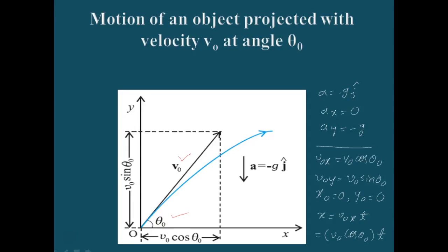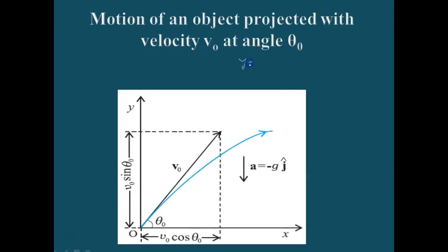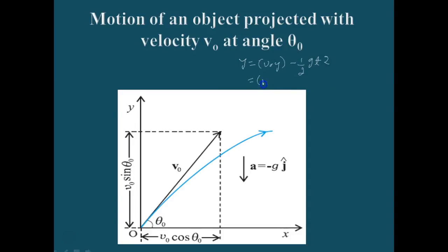Similarly, y is given by V0 sin theta0 · t minus half g t squared, and Vy = V0y minus half g t squared, which we can represent as V0 sin theta0 minus half g t squared.